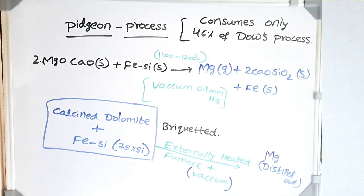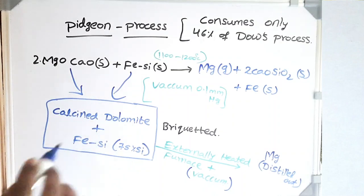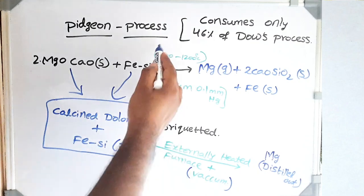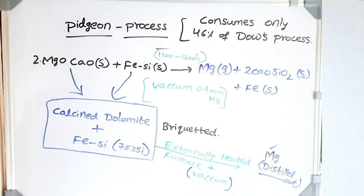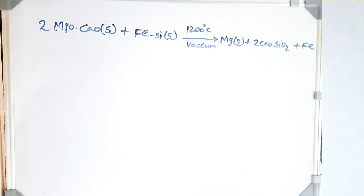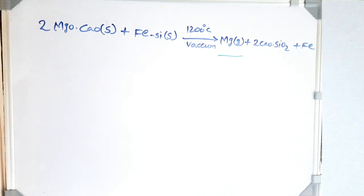During the Pigeon process, we take calcined dolomite and ferro-silicon, make briquettes — like bricks — and put them in an externally heated furnace. We apply vacuum and a temperature of 1150–1200°C. The generated magnesium vapor is continuously distilled out — condensed — so there is continuous removal of magnesium. According to Le Chatelier's principle, this reaction proceeds forward as long as we are removing the magnesium vapor. There is only one gaseous product, unlike carbon reduction where both magnesium and carbon monoxide are gases.